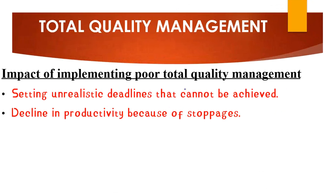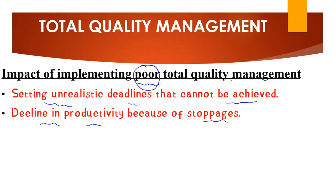What are the consequences of poor total quality management? First, we'll be setting unrealistic deadlines that cannot be achieved. Second, there will be a decline in productivity because there will be stoppages — if we don't have proper quality management systems, we might do something incorrectly, then have to stop and start all over again.